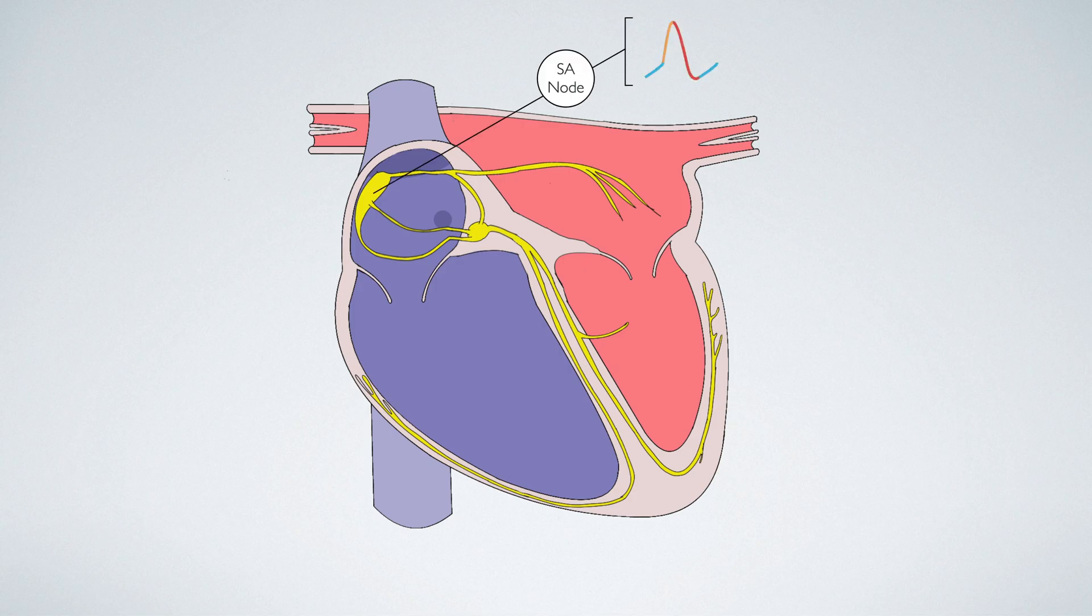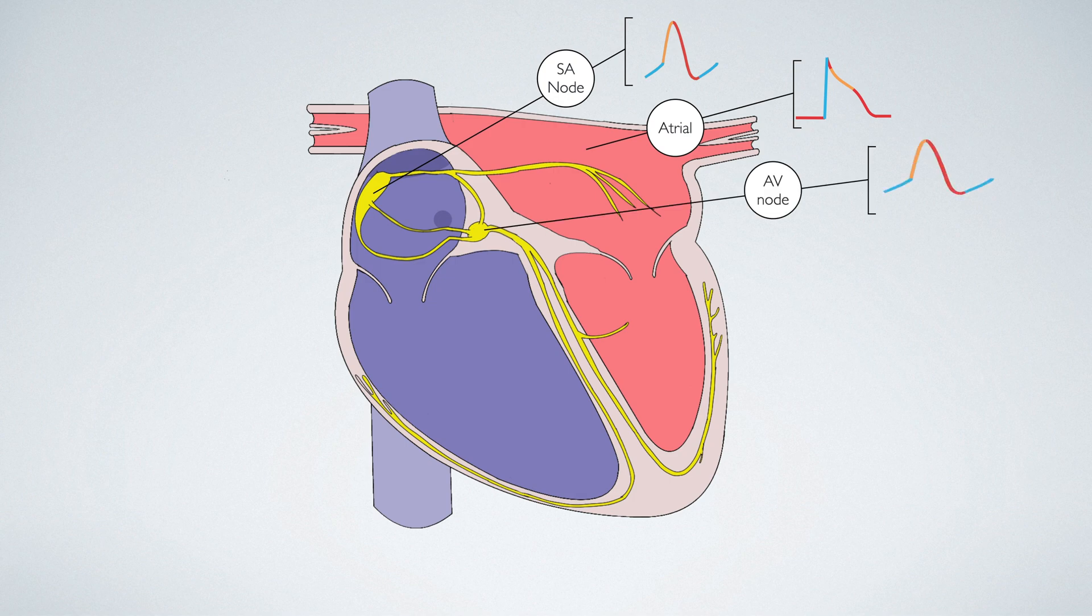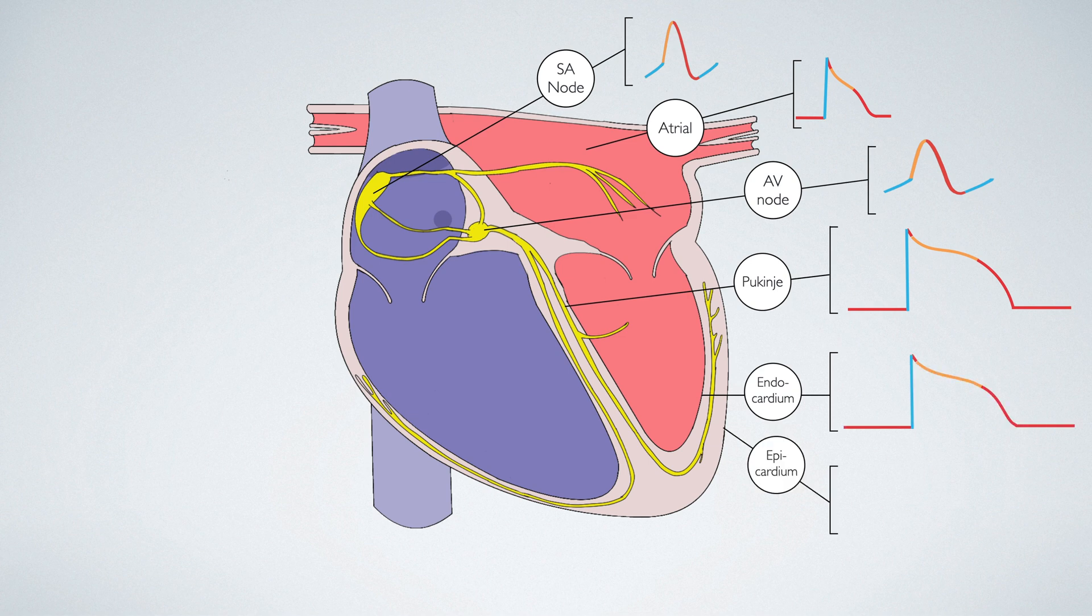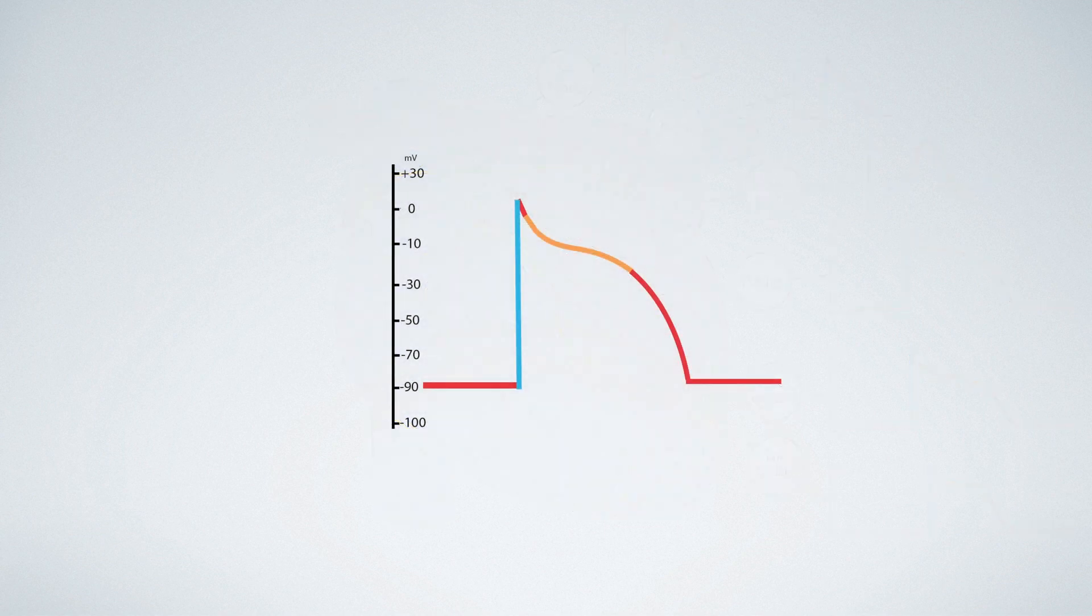This animation illustrates how the action potential changes from the sinoatrial node as it is conducted through the cardiac conduction system. Although these action potentials have varying shapes, there are particular qualities that they will all share. For example, they will all have a resting membrane potential and an overshoot when the action potential fires.